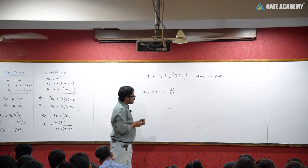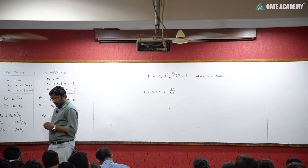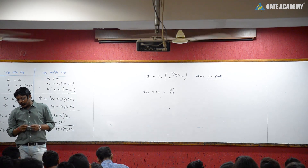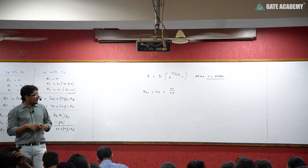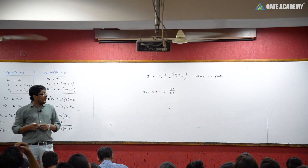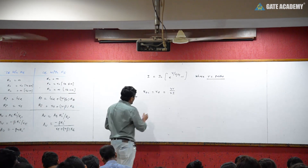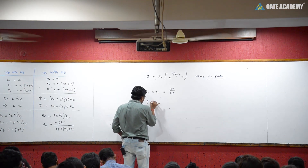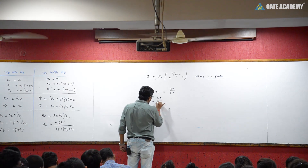So AC Resistance or Dynamic Resistance is written as small r_AC equal to small r_D equal to delta V upon delta I. And here we also define Dynamic Conductance — small g — which is equal to delta I upon delta V.